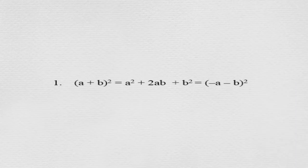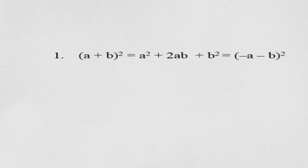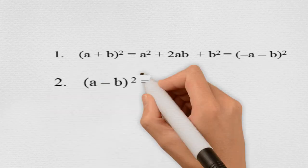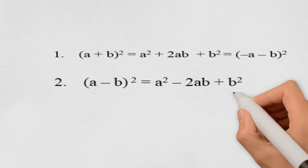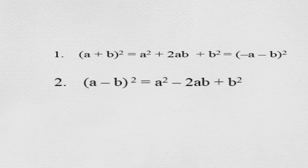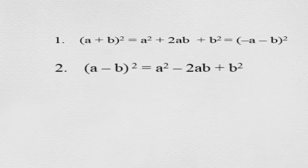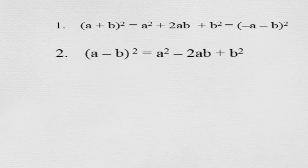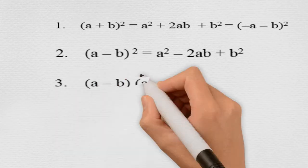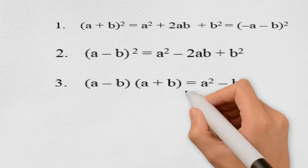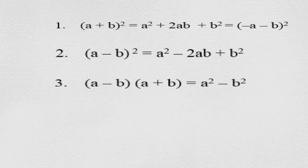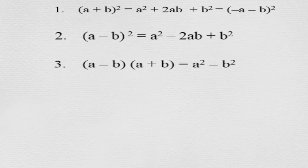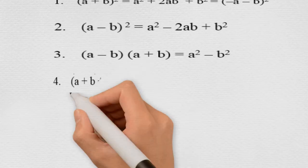This is also equal to (−a − b) whole square. The second identity is (a − b) whole square, which is equal to a square minus 2ab plus b square. The third identity is (a − b) into (a + b), which is equal to a square minus b square.